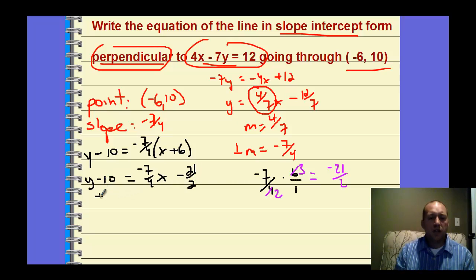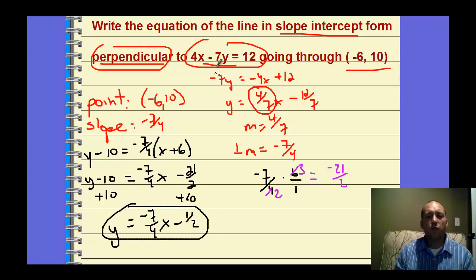So that's where I put my y intercept minus 21 halves. And then I can add 10 to both sides. So I find y equals negative 7 fourths x. And then negative 21 halves would be negative 10 and a half. Plus 10 would be negative one half. So this would be the equation in slope intercept form. That's perpendicular to 4x minus 7y but going to the point negative 6, 10.